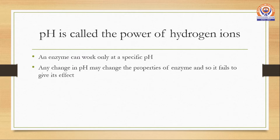pH is called the power of hydrogen ions or hydroxyl ions. An enzyme can work only at a specific pH, and any change in the pH may change the properties of that proteinaceous enzyme, so it would fail to give its usual effect.